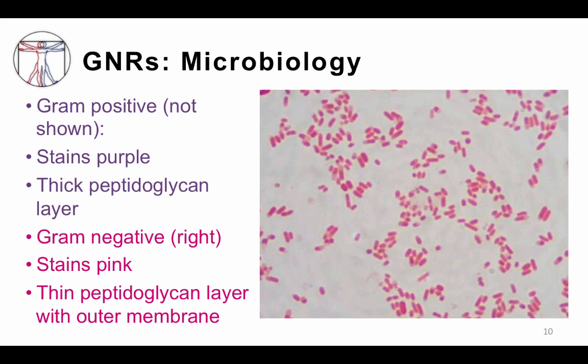The image on the right is a typical gram stain showing gram-negative rods. The gram stain is a commonly performed test by the microbiology lab that can rapidly differentiate gram-positive bacteria, which are typically blue, from gram-negative bacteria, and allow the clinician to begin to target therapy based on this information. While gram-positives have a thicker cell wall that traps the purple component of the gram stain, gram-negative rods have a thin peptidoglycan layer that does not hold onto the gram stain in the same way. We'll discuss this concept in more depth over the next few minutes.